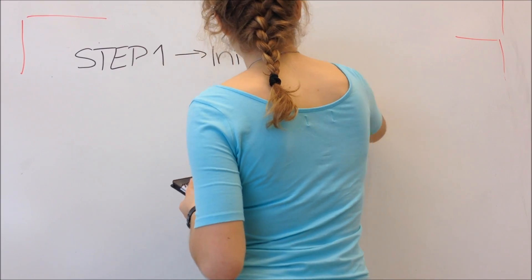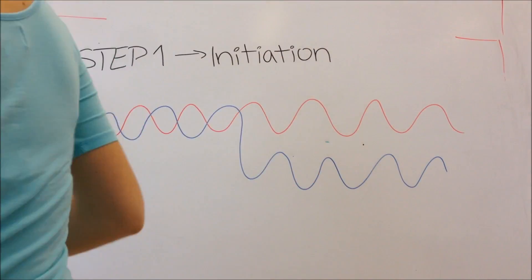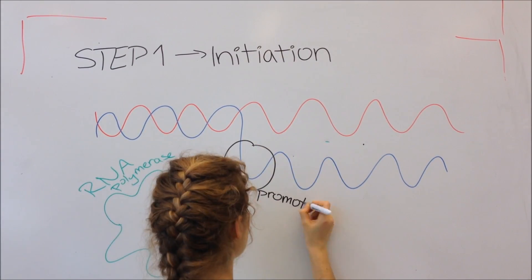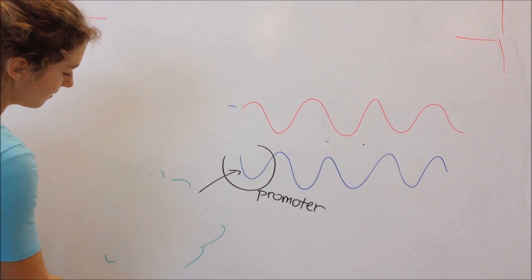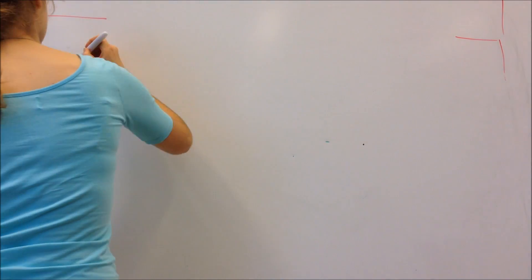The initiation is basically the beginning of transcription. We have something called the RNA polymerase, which is the copying mechanism of the RNA. And the place on the DNA where the RNA polymerase has to bind to create RNA is called the promoter. It's sort of like a guide that tells people where to go first.